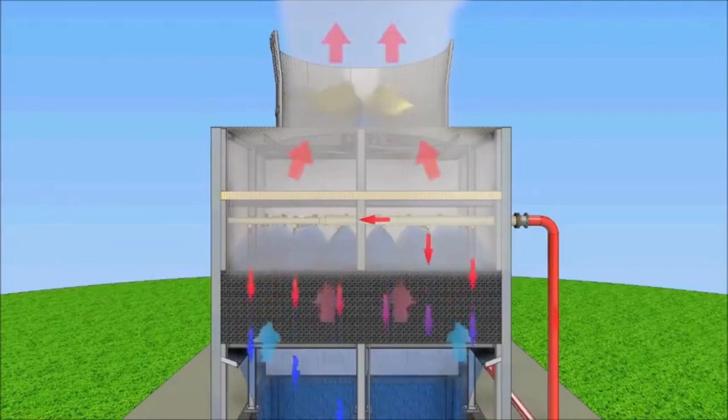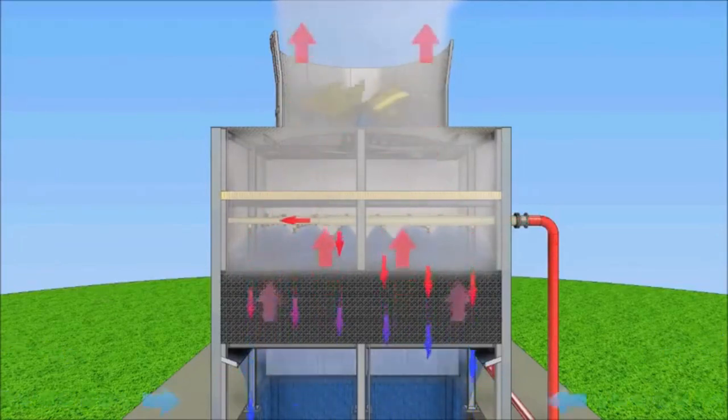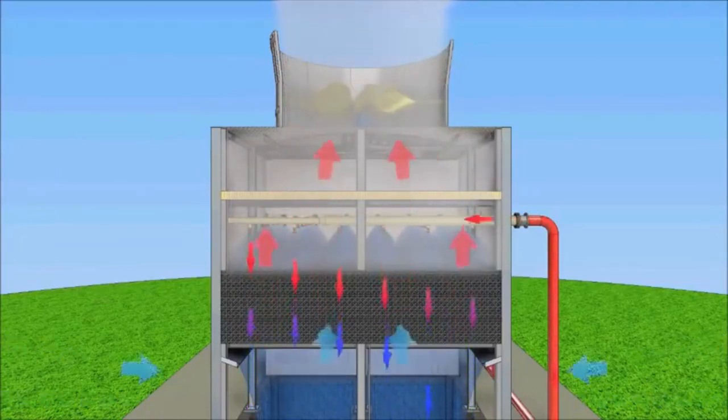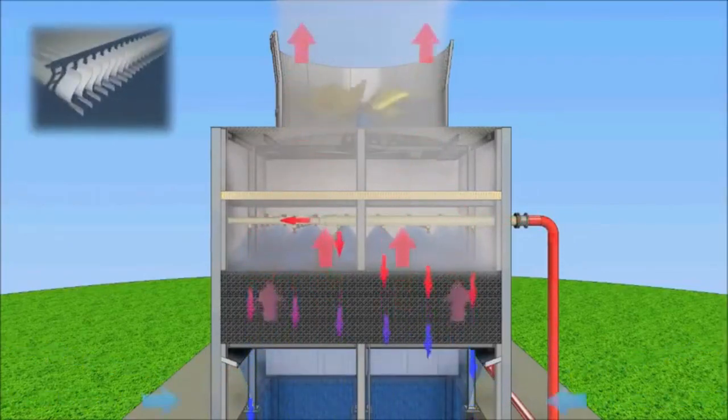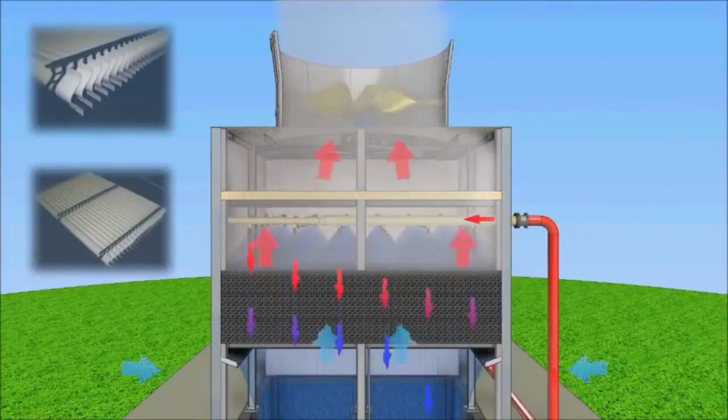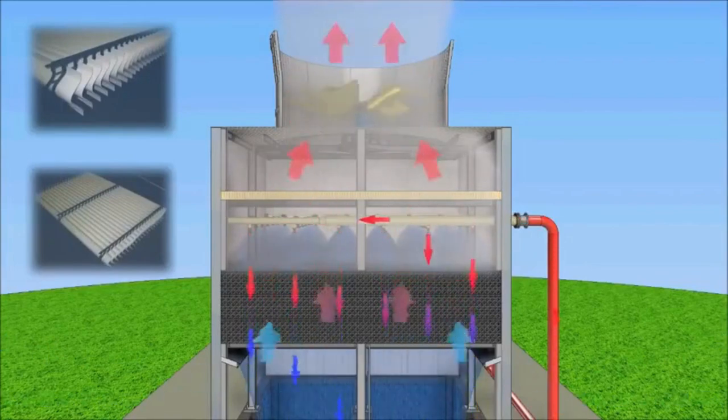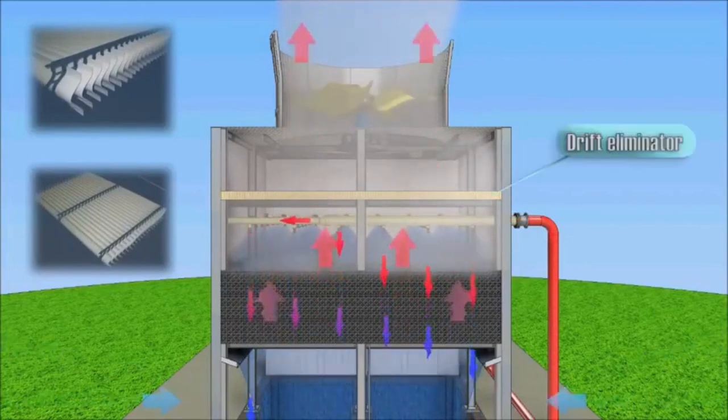Operating a cooling tower emits air saturated with water vapor and containing water droplets with size of 100-500 micron. To prevent entrainment of water droplets, above the water distribution system is installed a drift eliminator.